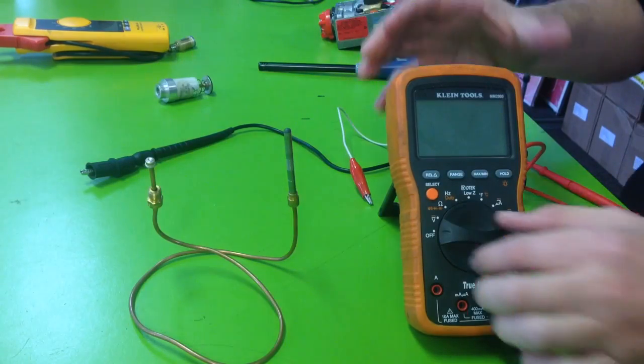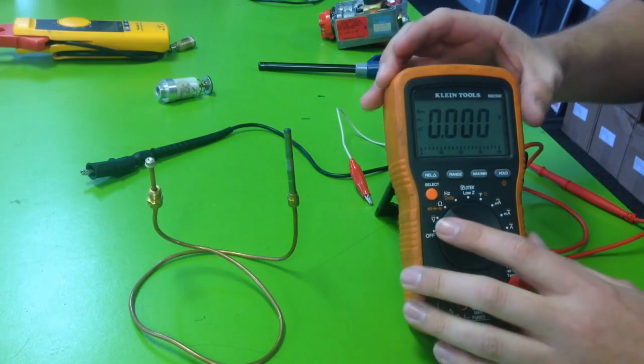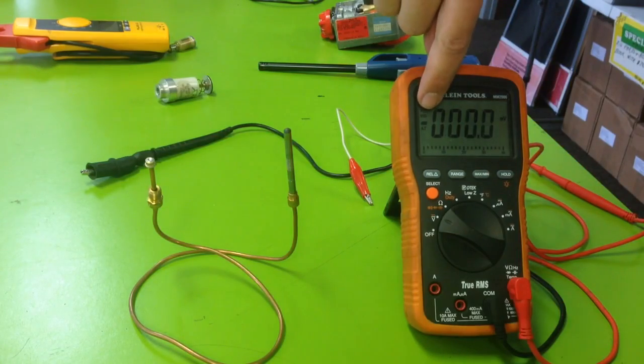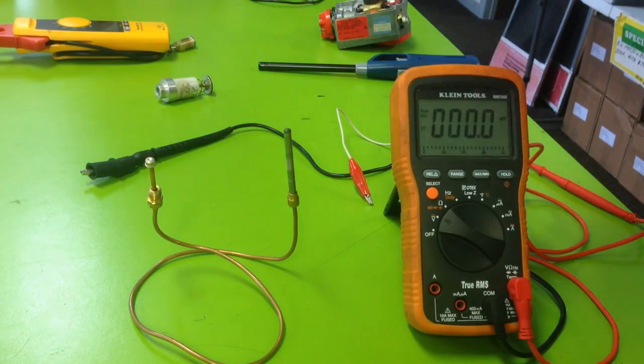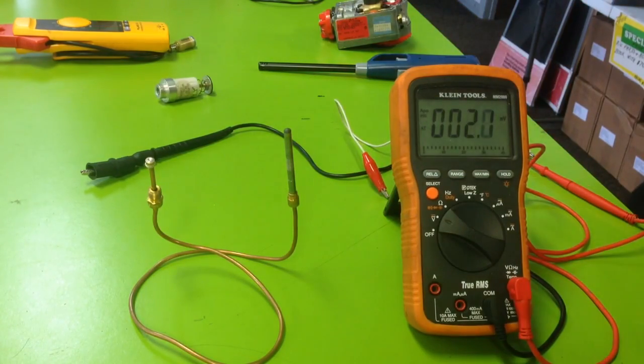So the first thing you want to do is go to your volt setting, and you want to be on DC millivolts. I'm going to click that and see the symbol change to DC. Sorry, I just said milliamps - it's millivolts. You see MV right there, it's millivolts.